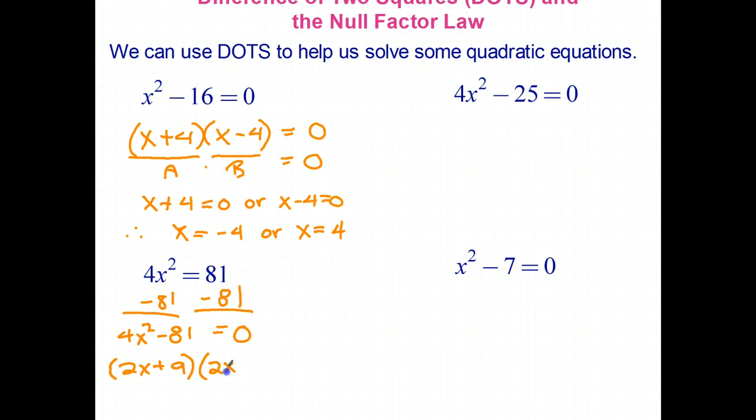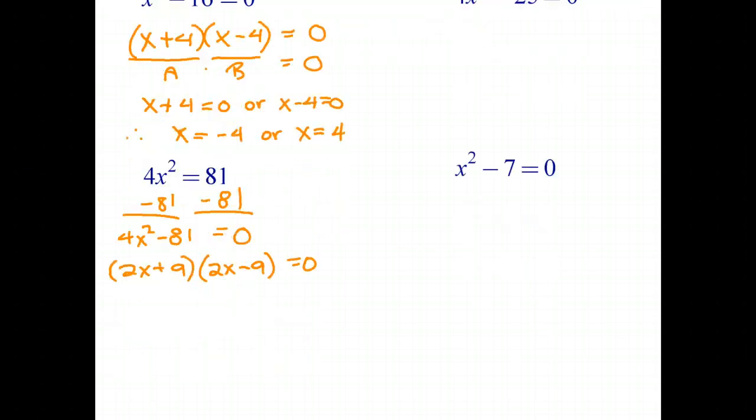So we get 2x plus 9 times 2x minus 9 is our second factor equals 0. I'm going to need a bit more space for this. So once again we can now use the null factor law.